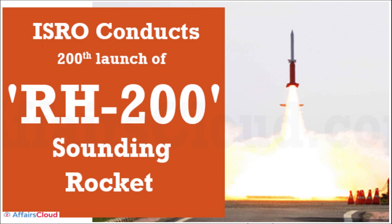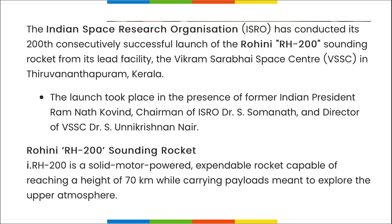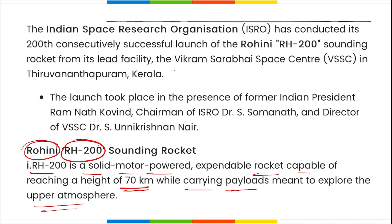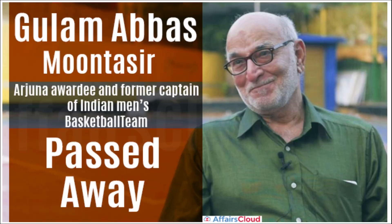ISRO has conducted the 200th launch of the RH-200 sounding rocket. RH stands for Rohini — it is a solid-motor-powered, expendable rocket capable of reaching a height of 70 km while carrying payloads to explore the upper atmosphere. This 200th flight was successfully launched from Vikram Sarabhai Space Centre in Thiruvananthapuram, Kerala.